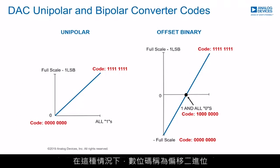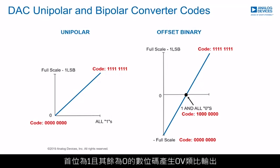The second plot shows the transfer function for a DAC which handles a bipolar output range from minus full-scale to plus full-scale minus 1 LSB. In this case, the digital code is called offset binary, where a digital input code of all zeros produces minus full-scale, a code of one followed by all zeros produces an analog output of 0V, and a code of all ones produces full-scale minus 1 LSB.